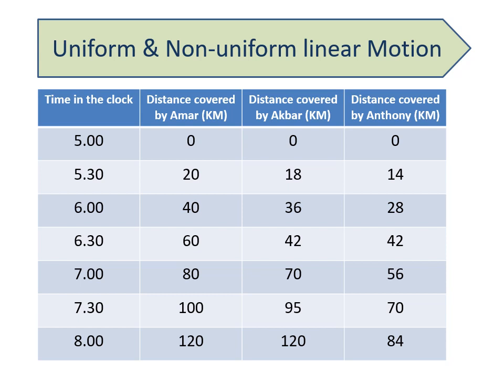In the next 30 minutes at 6.30, Amar covered 60 km, Akbar 42 km, and Anthony 42 km. At 7 o'clock, Amar covered 80 km, Akbar 70 km, and Anthony 56 km. At 7.30, Amar covered 100 km, Akbar 95 km, and Anthony 70 km. Finally at 8 o'clock, Amar covered 120 km, Akbar 120 km, and Anthony also covered 120 km.